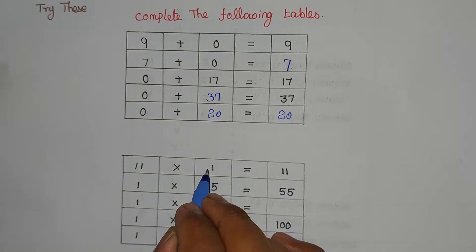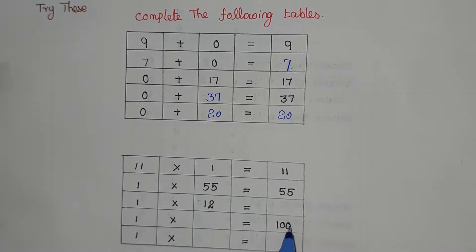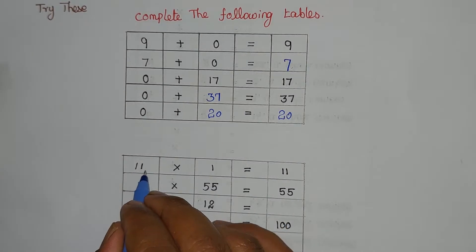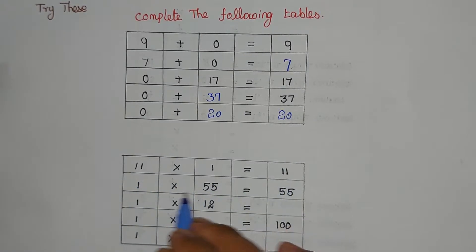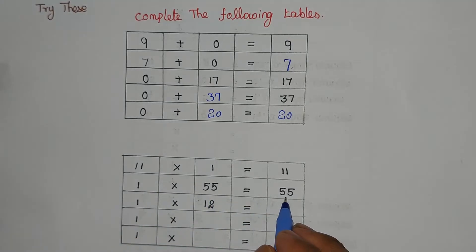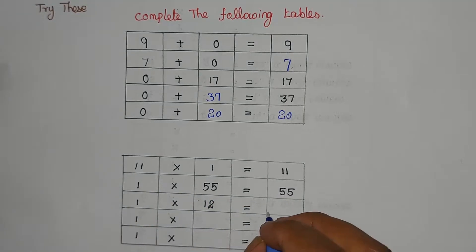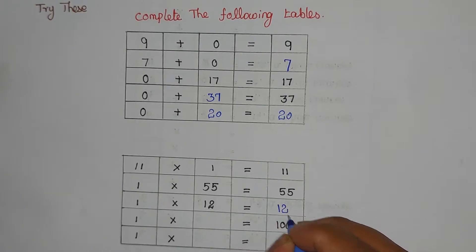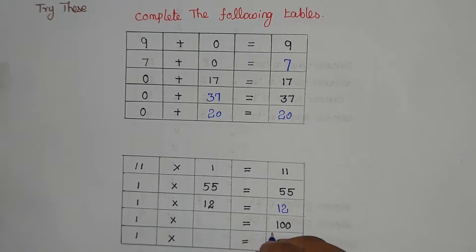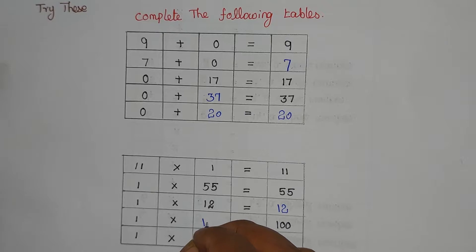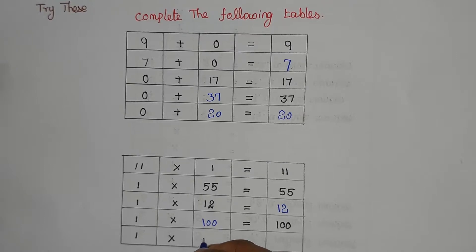Next table — multiplication. Since 1 is the multiplicative identity: 11 into 1 is 11; 1 into 55 is 55; 1 into 12 is 12; 1 into blank equals 100, so the blank is 100; 1 into 30 equals 30.